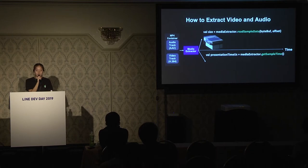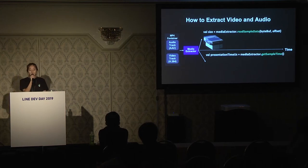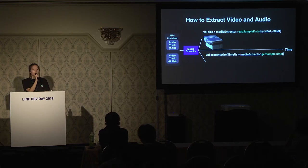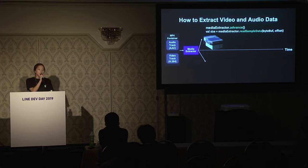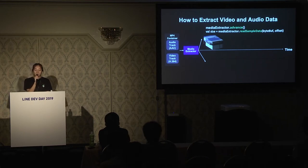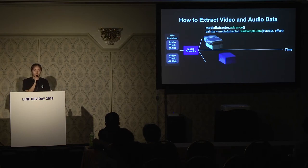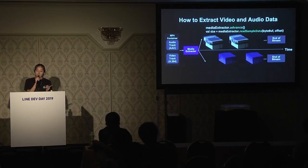For actual extracting, we can use the readSampleData API, which retrieves the encoded data stream of audio and video tracks. We can also use getSampleTime, which returns the current position time of the data stream in microseconds. There is another API called advance — we can advance to the next chunk of data stream, then call readSampleData again and again over the entire stream.